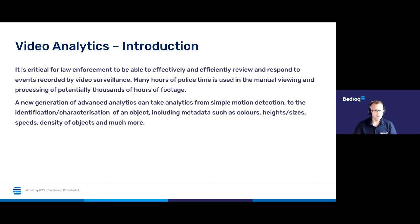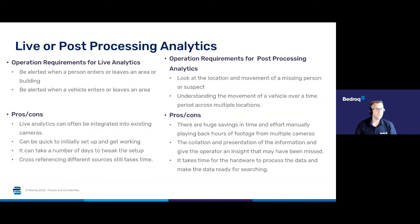The idea here is to make sure we can reduce things like false alarms, which would make motion detection on its own very difficult or impossible to use in a professional environment. There are two types of analytics: live and post-processed. Some of the operational requirements around live analytics would be to be alerted when a person enters or leaves an area or a building, and to be alerted when vehicles leave or come onto a driveway — those types of things.